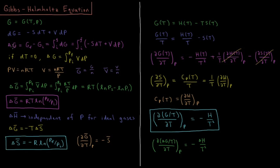The Gibbs energy is a state function, so the change in Gibbs energy during a large change in the system's state, delta G, is equal to the final Gibbs energy minus the initial Gibbs energy. This is also equal to the integral from the initial state to the final state of dG for every point along the change, or equivalently the integral from the initial to final state of minus S dT plus V dP.